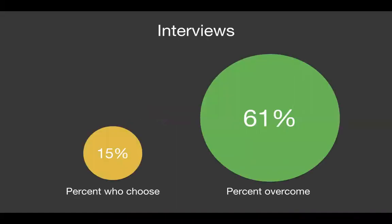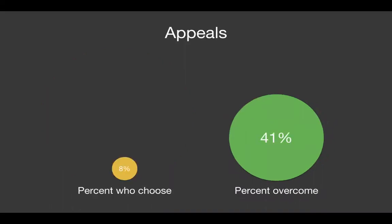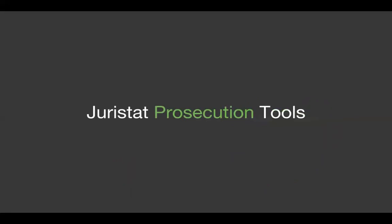So what does all this mean for you? When comparing the frequency of applicant responses versus their successfulness, we noticed some lopsided results. Only 15% of applicants who received a 101 rejection chose to interview their examiner, despite an interview being successful at overcoming a 101 rejection 61% of the time. Conversely, 64% of applicants chose an RCE despite it being successful only 41% of the time. Looking at appeals — only 8% of applicants chose appeals, which is typical, and they have about the same effective rate as an RCE in this case.